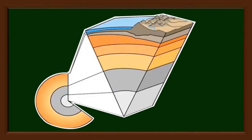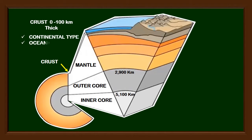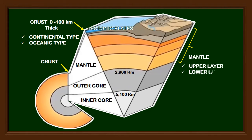The geosphere of the Earth is subdivided into three main layers: the core, the mantle, and the crust. The crust is divided into two types, the continental and the oceanic type. The combination of these two is what we call the tectonic plates. The mantle is also divided into two layers, the upper layer and the lower layer.